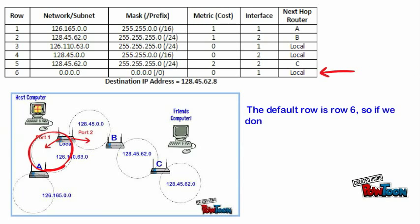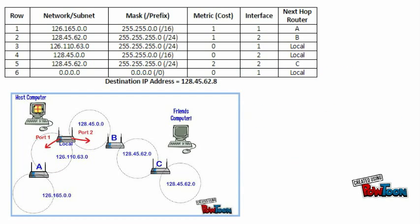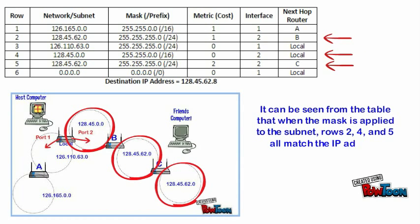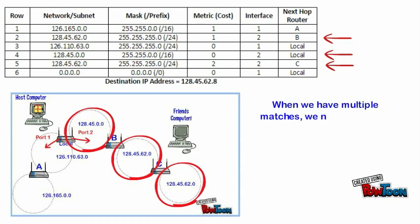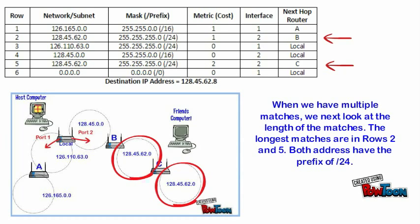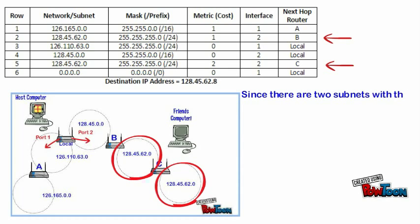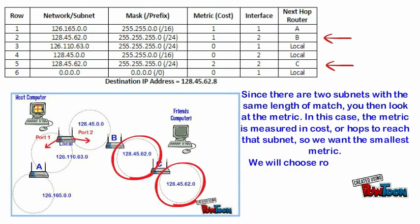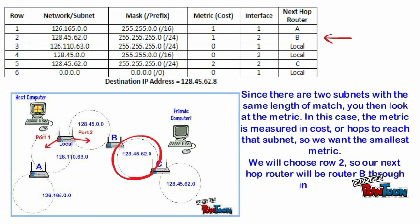The default row is row 6, so if we don't have a better match we will use the default instead. But first let's check to see if there is a better option. From the routing table, when the mask is applied to the subnet, rows 2, 4, and 5 all match the IP address destination. When we have multiple matches we next look at the length of the matches — the longest matches are in rows 2 and 5, both with prefixes of /24. Since there are two subnets with the same length of match, you then look at the metric, which is measured in cost or hops to reach that subnet, so we want the smallest metric. We will choose row 2, so our next hop router will be router B through interface 2.